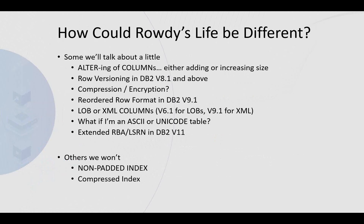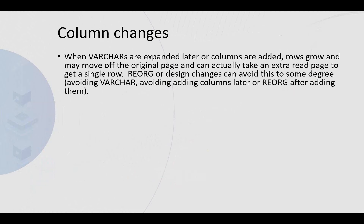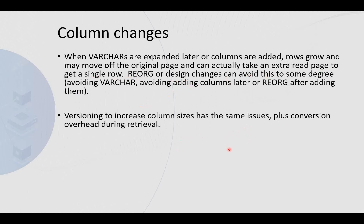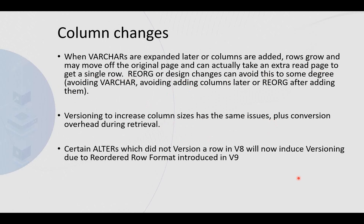How could Rowdy's life have been a little different? We'll talk about altering of columns, row versioning, compression, encryption, reordered row format, and ASCII and Unicode tables. When varchars are expanded later or columns are added, rows grow and may move off the original page and can actually take an extra read to get a single row. Reorg or design changes can avoid this to some degree — by avoiding varchars, avoiding adding columns later, or reorging after adding them straight away. Versioning to increase column sizes has the same issues plus conversion overhead during retrieval.